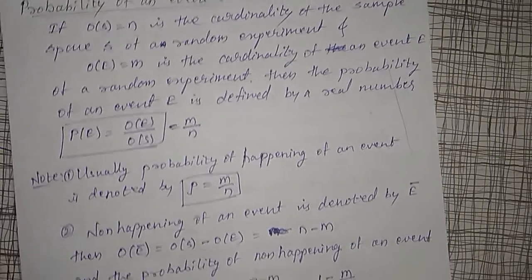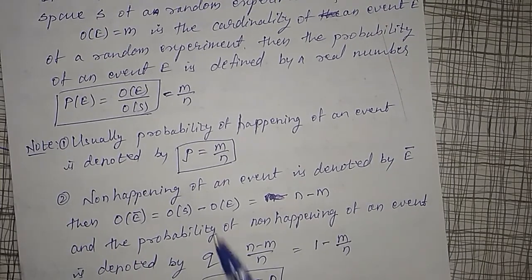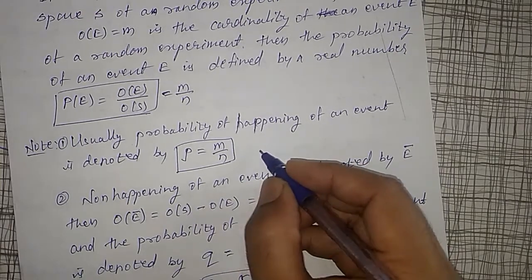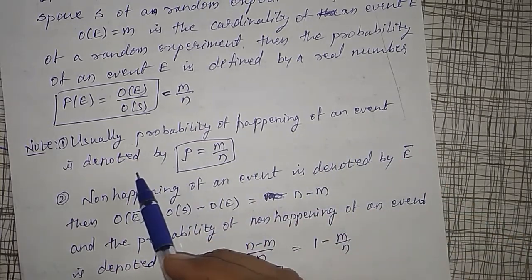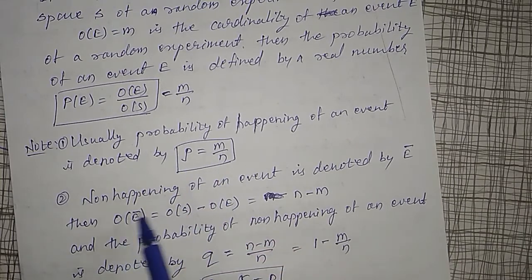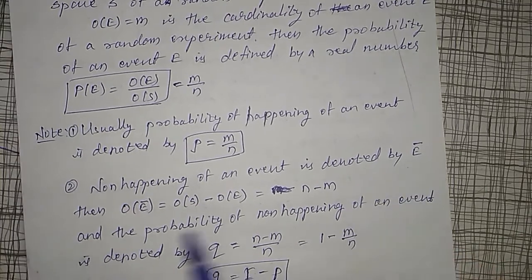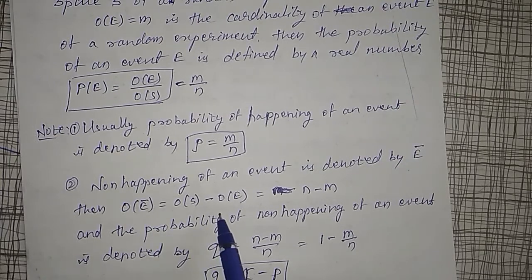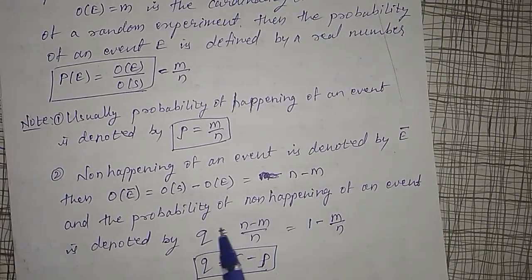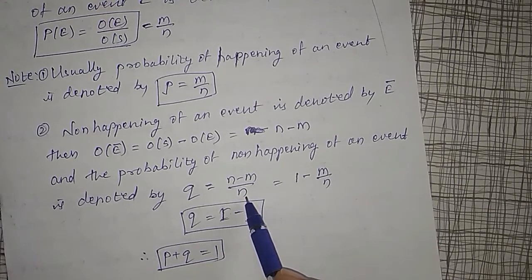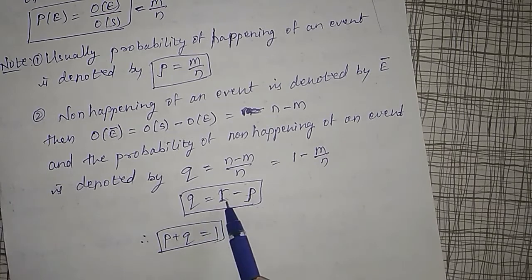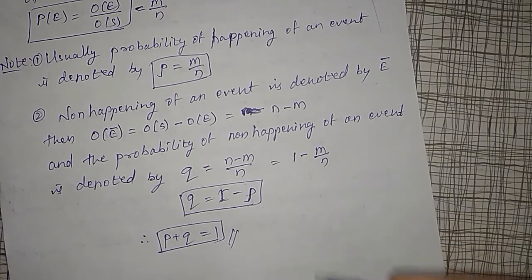Some notes: the probability of happening of an event is denoted by small p, and we call it the probability of success. So p equals m by n. The non-happening of an event is denoted by E-bar, where the order of E-bar equals n minus m. The probability of non-happening is denoted by q, which equals (n minus m) divided by n, that is 1 minus p. Therefore, p plus q equals 1. This relation will be used further in the next explanation.